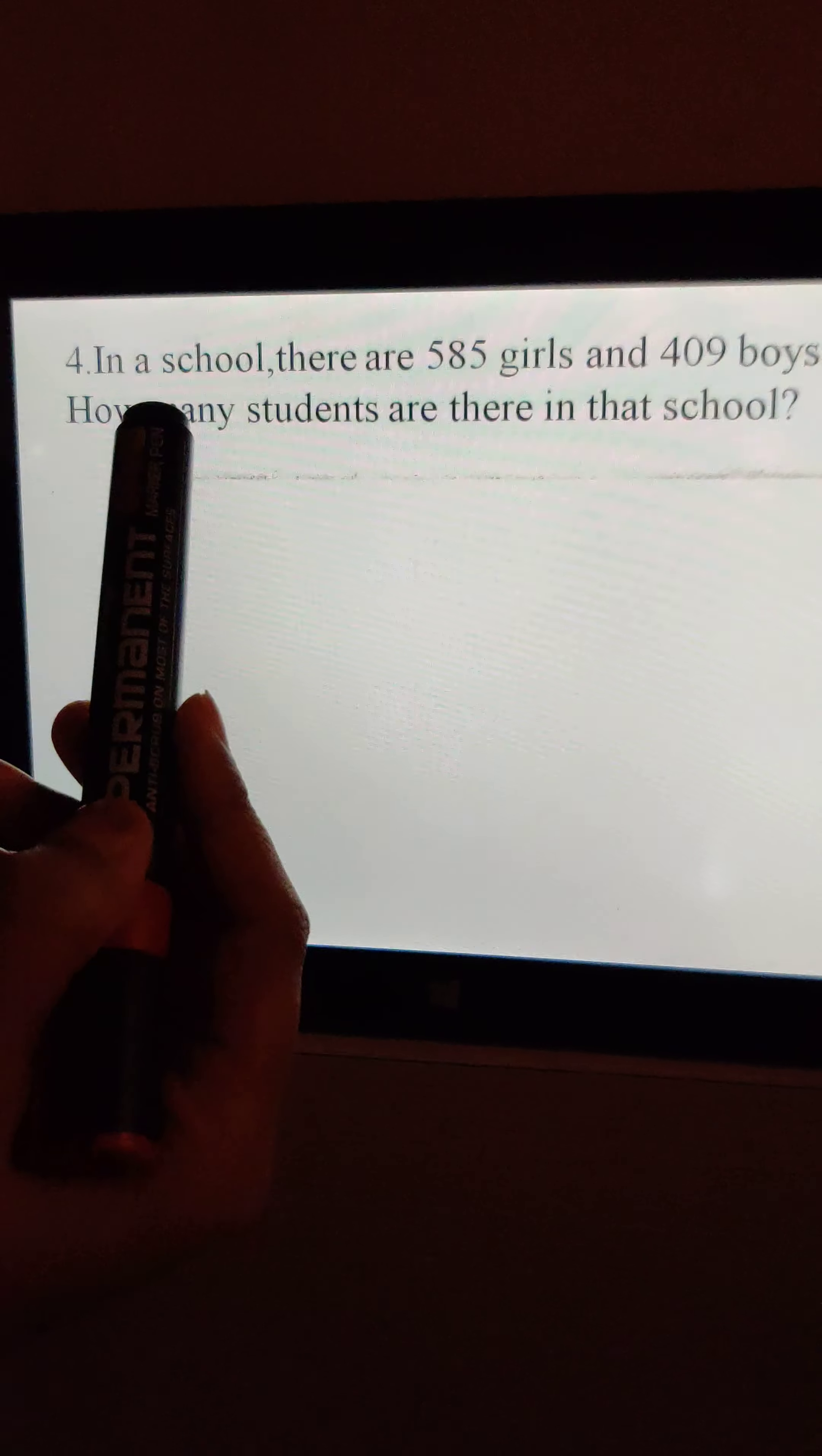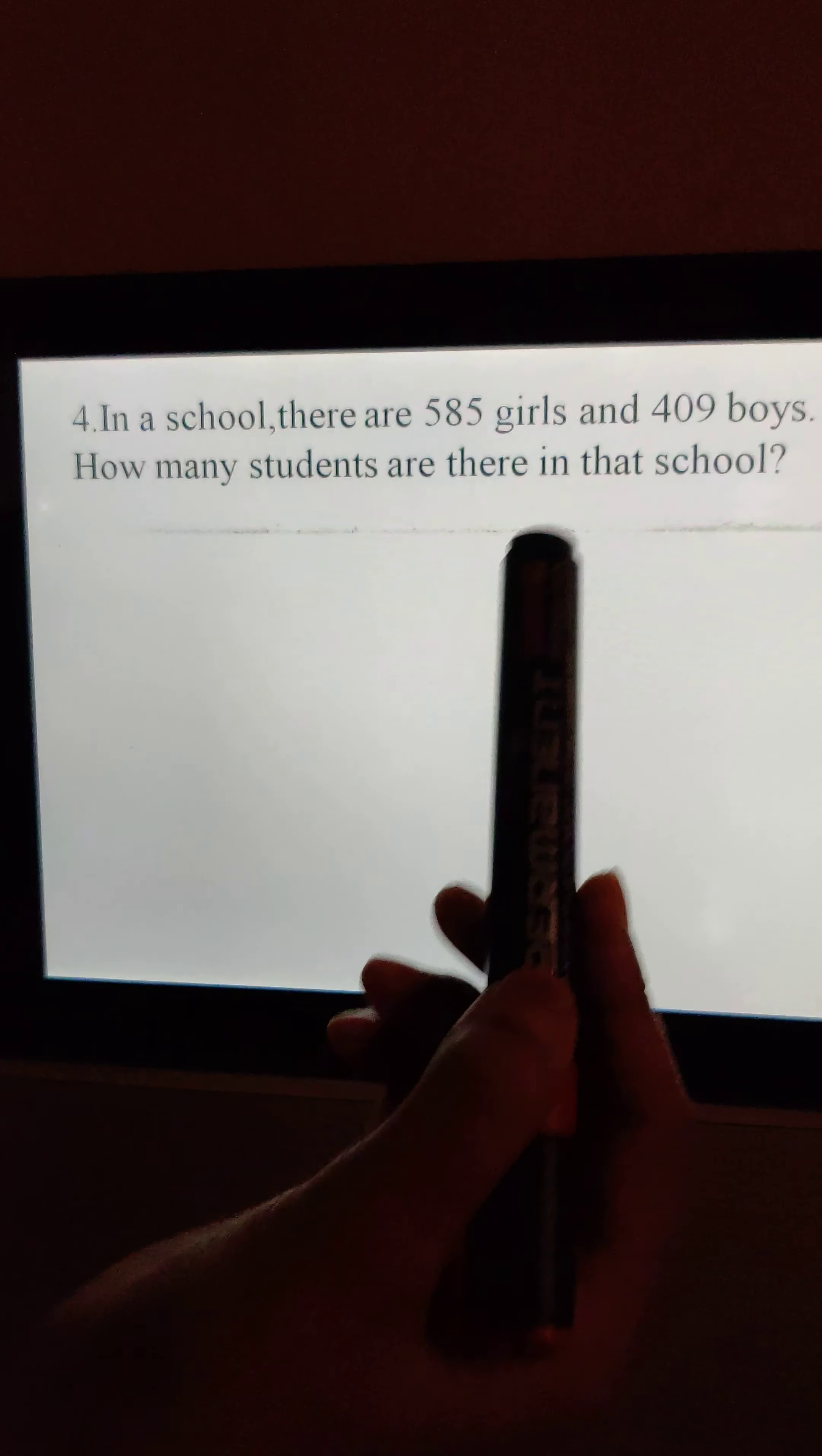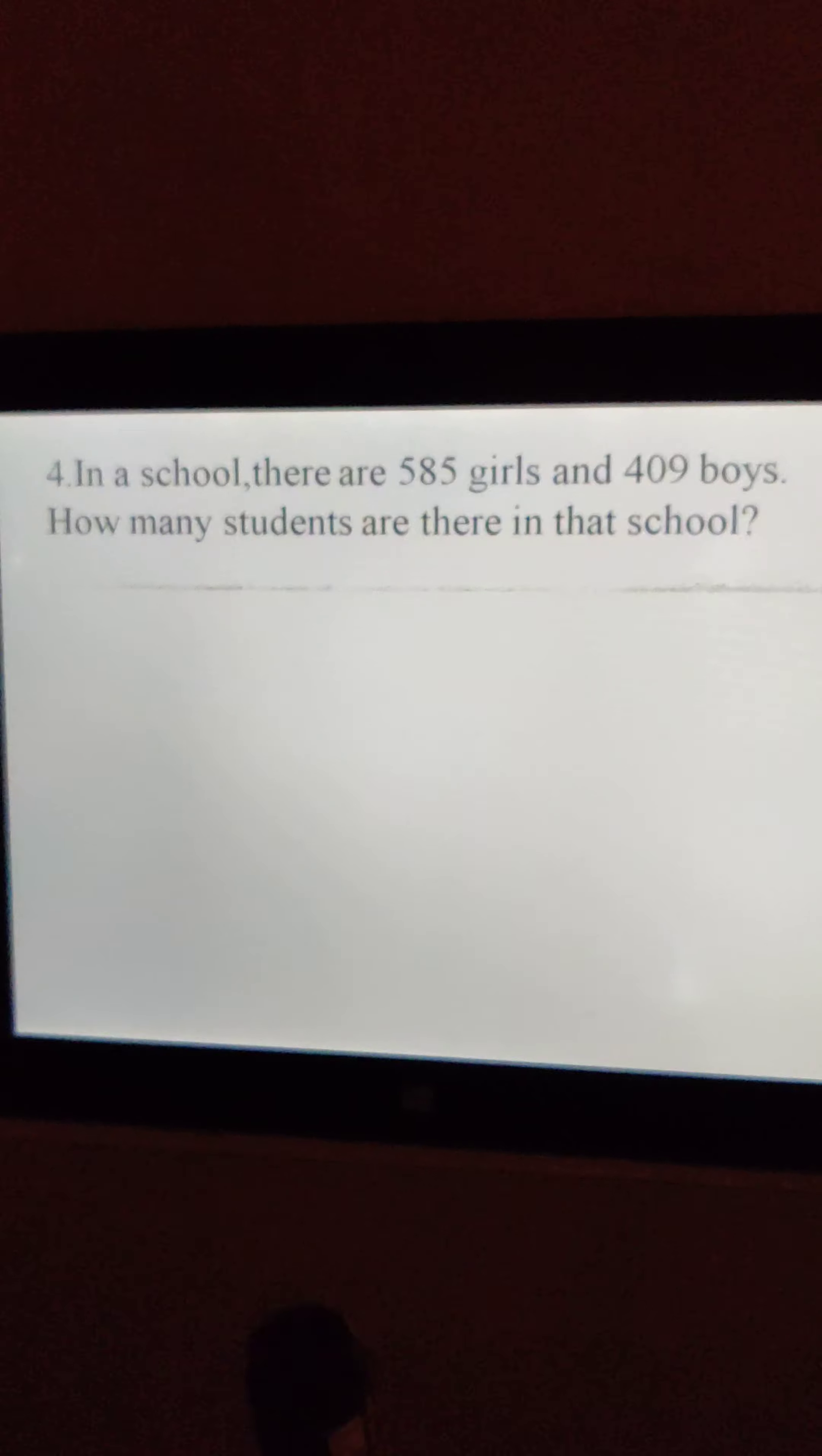Now fourth one. In a school, there are 585 girls and 409 boys. How many students are there in that school? A school is there. In that school, 585 girls and 409 boys are there. Students, can you see there is some difference in this word problem? See, these are three digit word problems, and we were solving two digits.